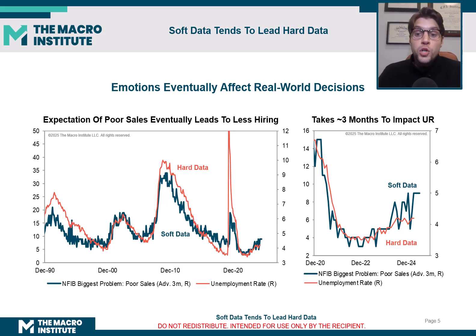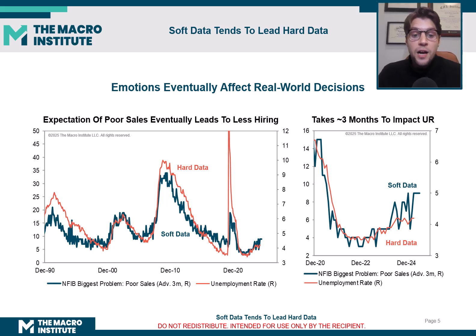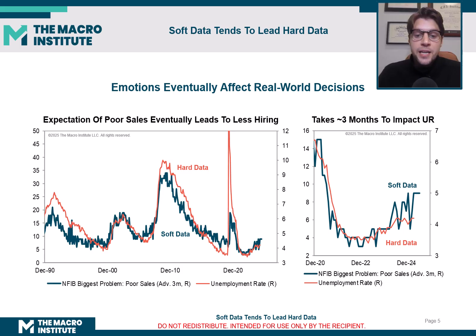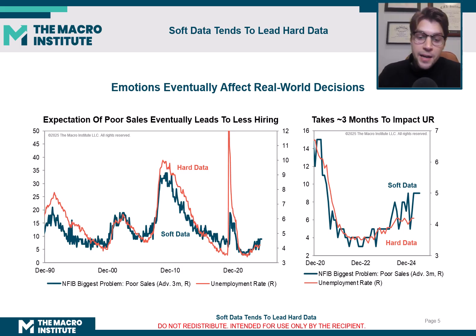So if you were just relying on the hard data series — the unemployment rate — you would be behind the curve of someone who was looking at the NFIB biggest problem series. They would have a general sense that the unemployment rate was set to move higher. It's not perfect, but over the course of three months, they'll have a little bit of a heads up on you.